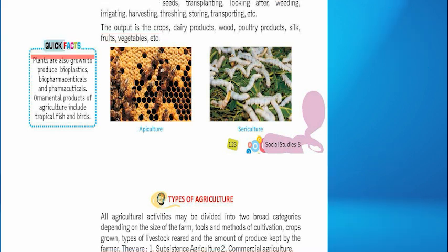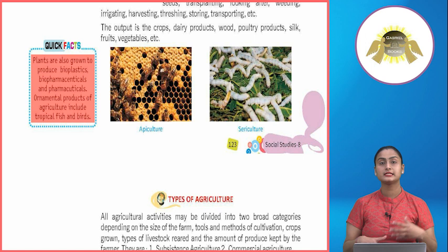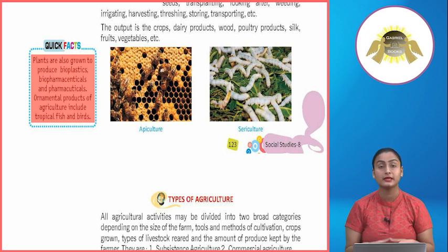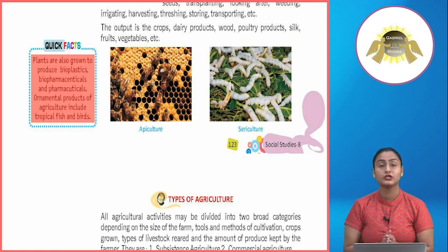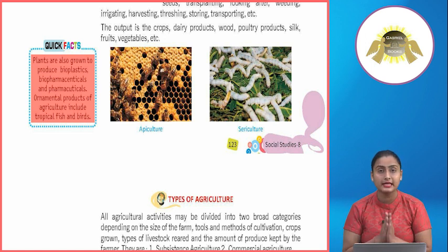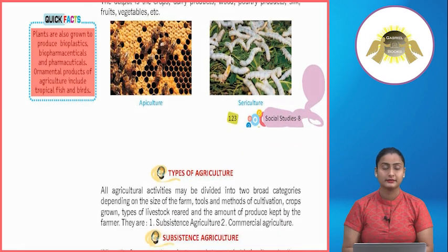Quick facts: Plants are also grown to produce bioplastics, biopharmaceuticals and pharmaceuticals. Ornamental products of agriculture include tropical fish and birds. Medicinal herbs supply pharmaceuticals and help make medicines. Some fisheries are also used for ornamental purposes.